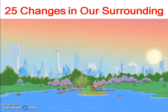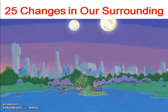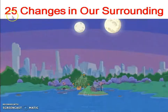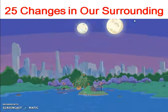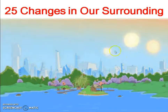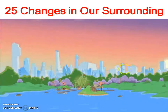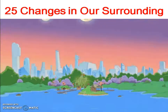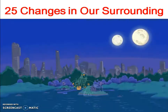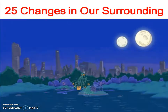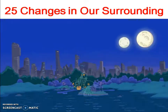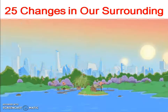Welcome dear students. Today we are going to learn standard third subject Environmental Studies, chapter number 25: Changes in Our Surroundings. Dear students, we can see the things around us clearly during the day, but at night we can't see them clearly. This happens because during the day we get sunlight. After sunset it grows dark, so there is not enough light. At night we see the stars in the sky but we don't see the things around us clearly.